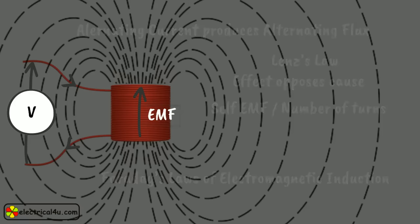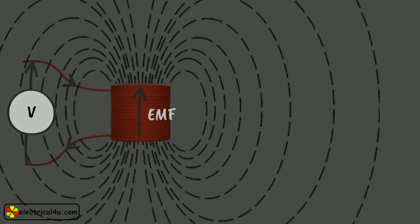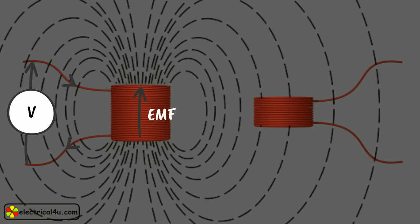We have said that there is another winding in the most basic transformer. Now we are coming to the second winding. Supposing one separate winding is brought nearer to the first winding, then this second winding gets linked with a portion of the varying flux of the first winding. Due to this varying flux linkage, there will also be an induced EMF across it. This induced EMF would be quite small, as the flux linkage is small.